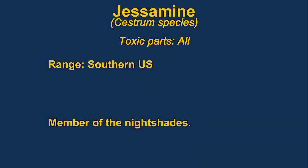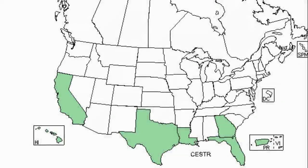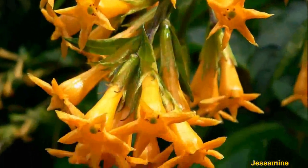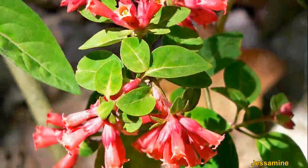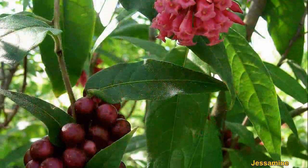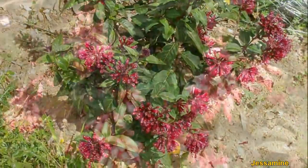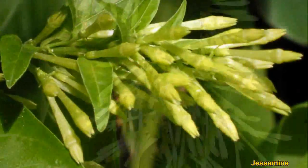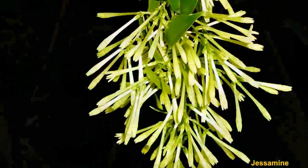Jessamines, or cestrums, are members of the nightshade family. They consist of 150 to 250 species of plants. The main problem with them is toxicity to livestock. Symptoms include tachycardia, fever, and slowness in breathing. In extreme cases, it can cause convulsions and death.